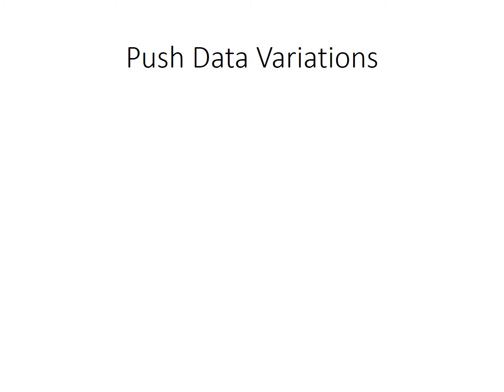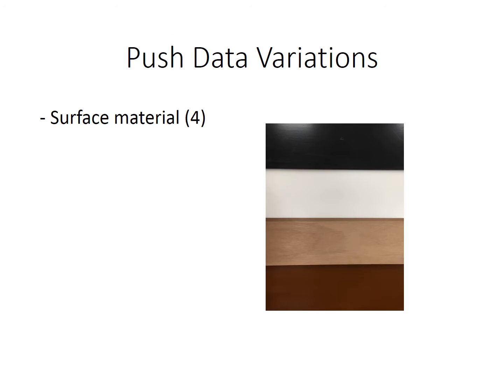Here we show the variations in our pushing dataset in terms of the following six dimensions. First, we conduct experiments on four surfaces: ABS, delrin, plywood, and polyurethane. They have different frictional properties.